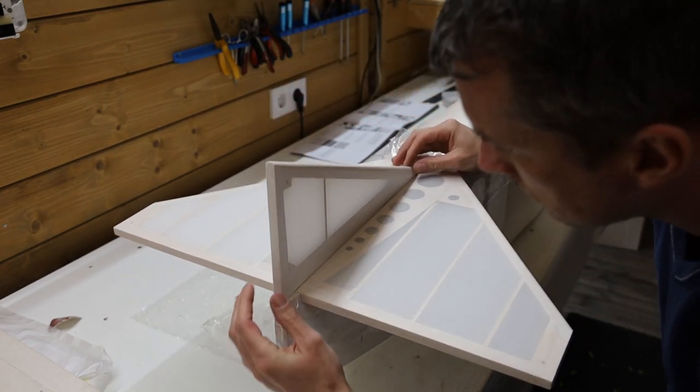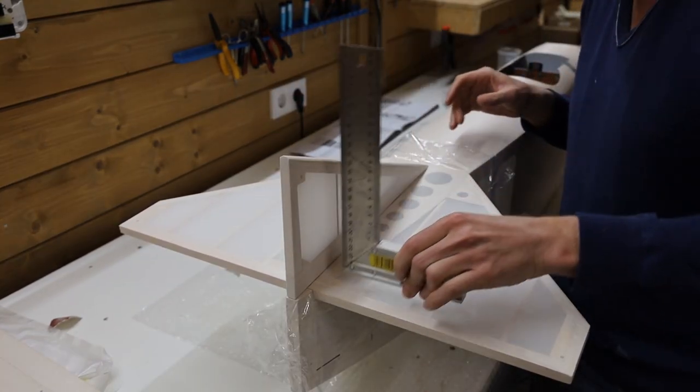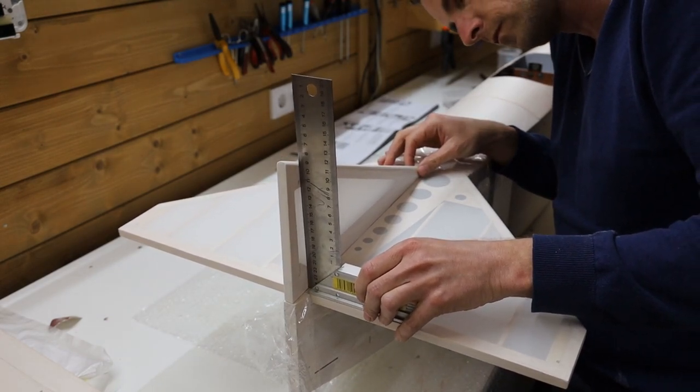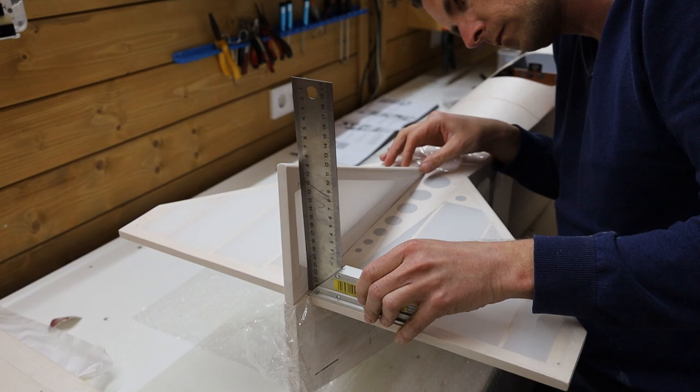It's very important that the angles of the vertical stab are all good. When this is not right you will get a plane that will not fly straight and you need to sub-trim the rudder to compensate for this.